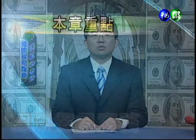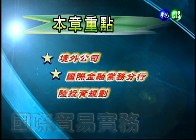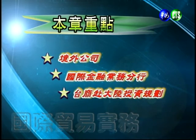今天第14講講的是境外公司與OBU帳戶，這是比較不容易見到但對進出口廠商相當重要的一環。本講的重點包括第一個境外公司，第二個國際金融業務分行，第三個台商赴大陸投資的規劃。台灣是海島型貿易經濟體，在進出口貿易過程中常常用到境外公司以及OBU帳戶。